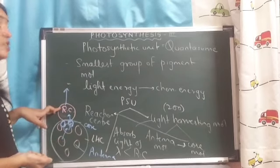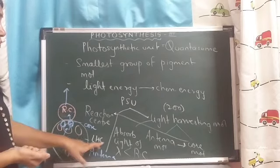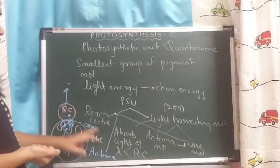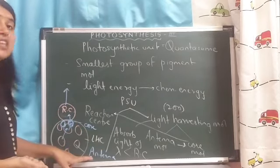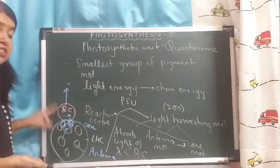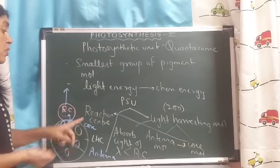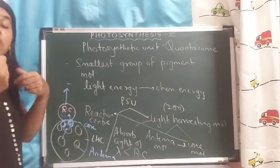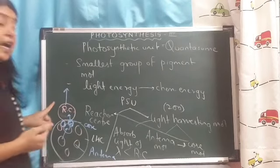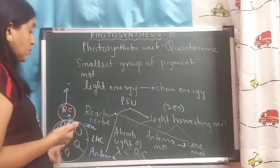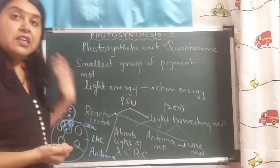The photosynthetic unit consists of light harvesting molecules and a reaction center. Light harvesting molecules consist of core molecules and antenna molecules. Antenna and core molecules will absorb energy of different wavelengths than the reaction center, and they will transmit this energy by resonance.